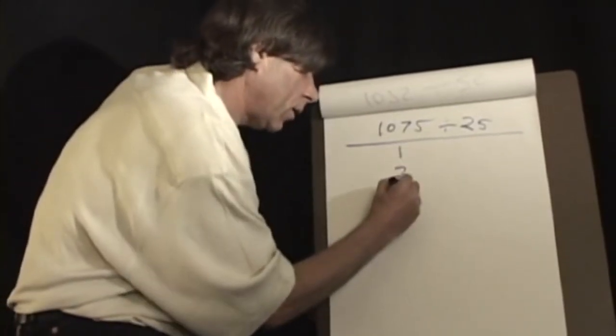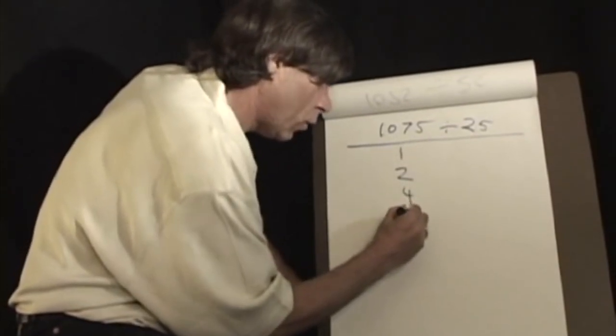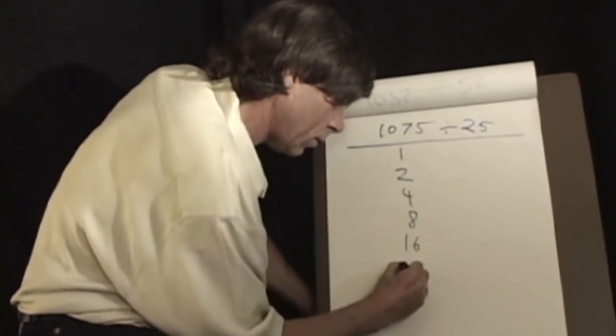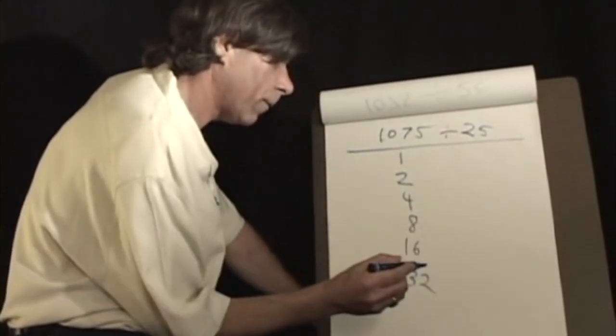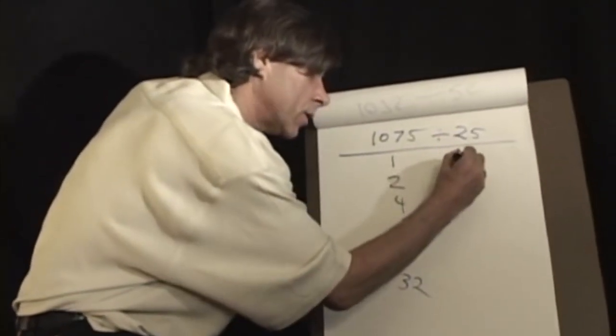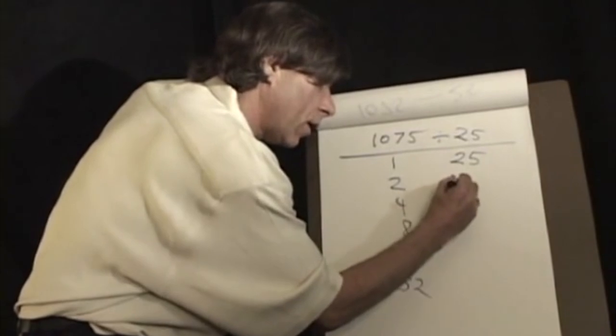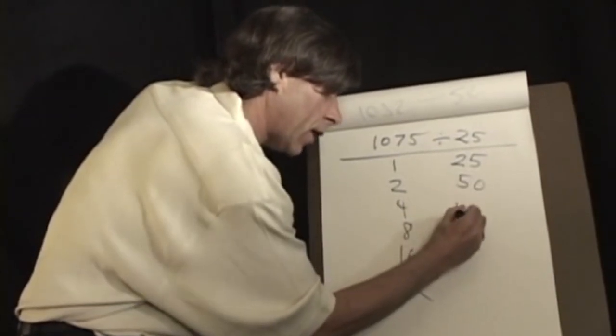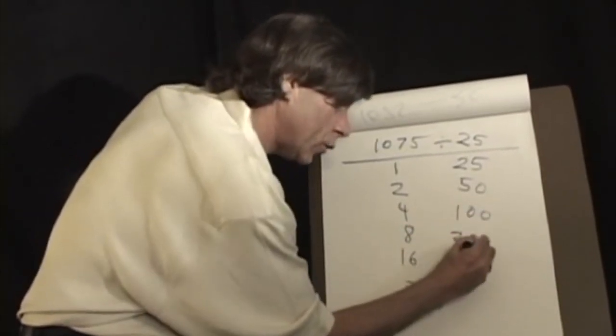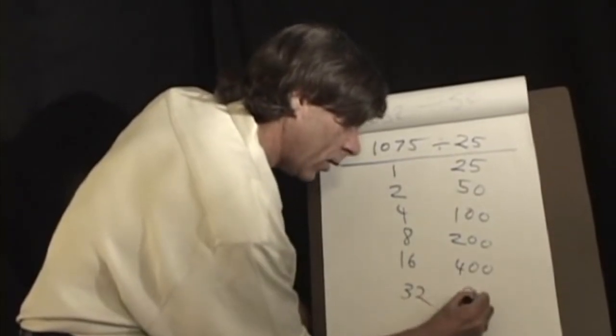And the way to do it is like this. Simply write out the powers of two, one, two, four, eight, sixteen, thirty-two, and so forth. Here again, just the powers, the doubling of twenty-five, fifty, double that, one hundred, two hundred, four hundred, eight hundred.